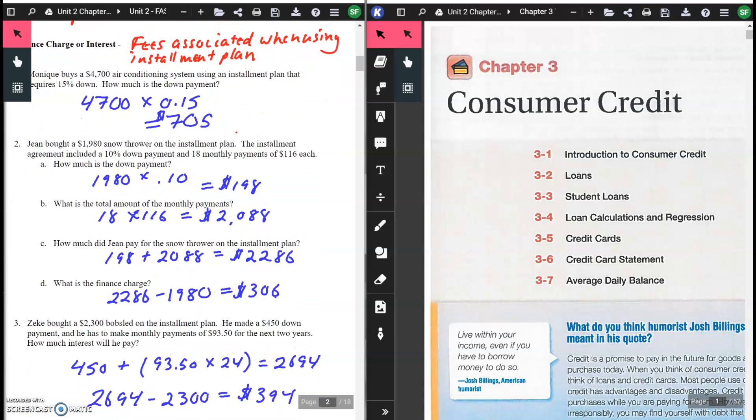Number one: Monique buys a $4,700 air conditioning system using an installment plan that requires 15% down. How much is her down payment? You take your $4,700, multiply that by 15%, which gives you $705 as a down payment.